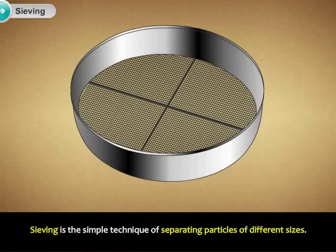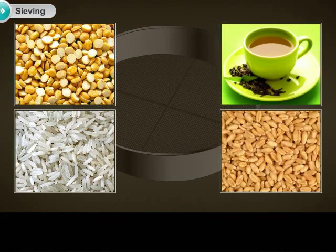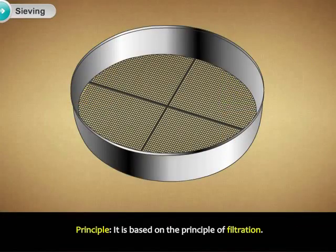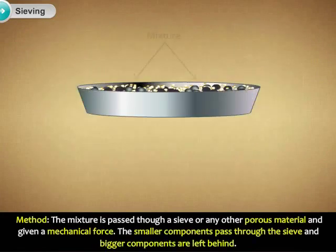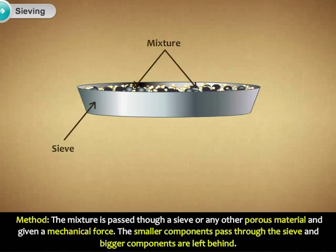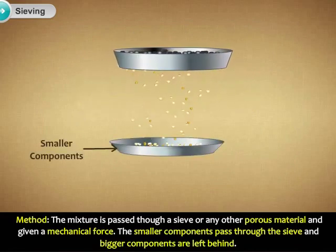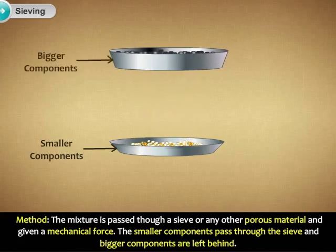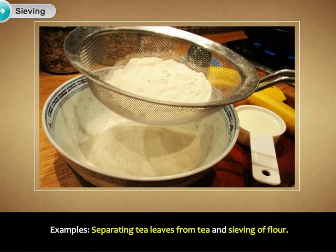Sieving is the simple technique of separating particles of different sizes. Principle: It is based on the principle of filtration. Method: The mixture is passed through a sieve or any other porous material and given a mechanical force. The smaller components pass through the sieve and bigger components are left behind. Examples: Separating tea leaves from tea, and sieving of flour.